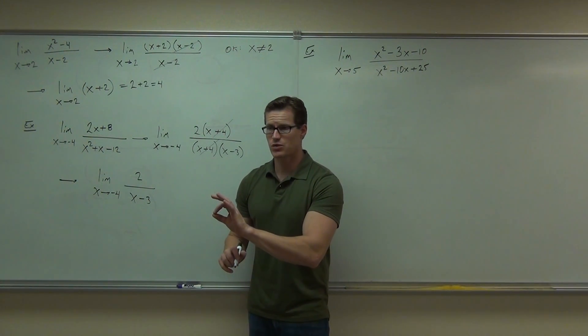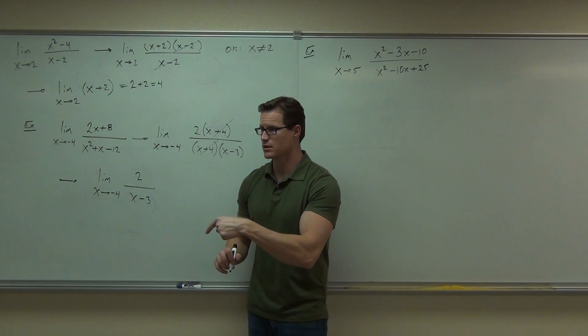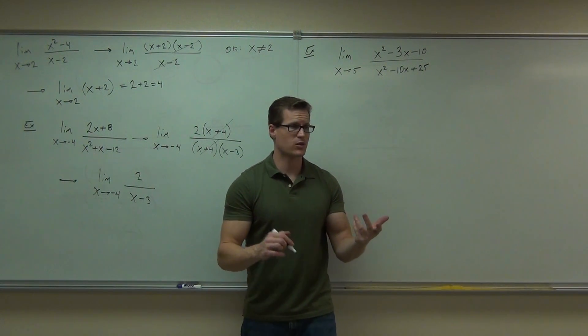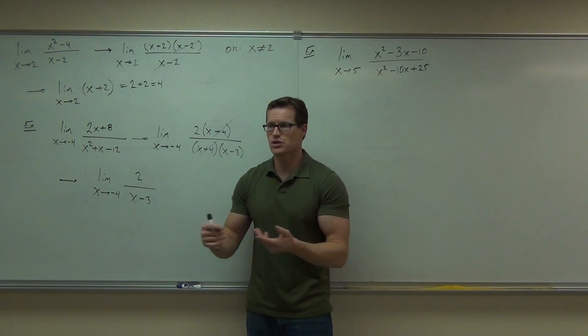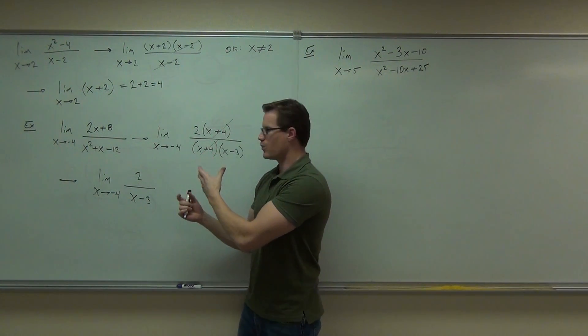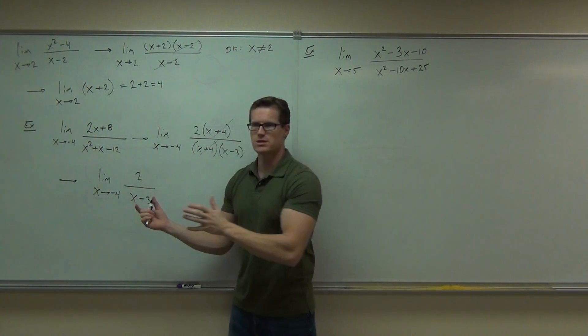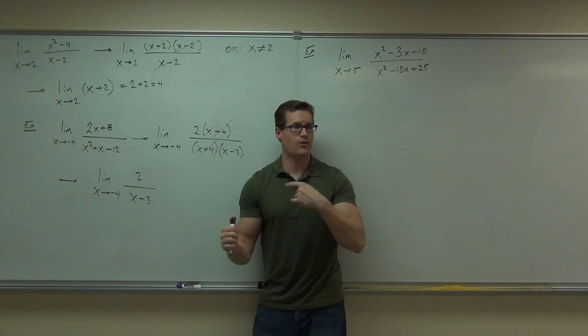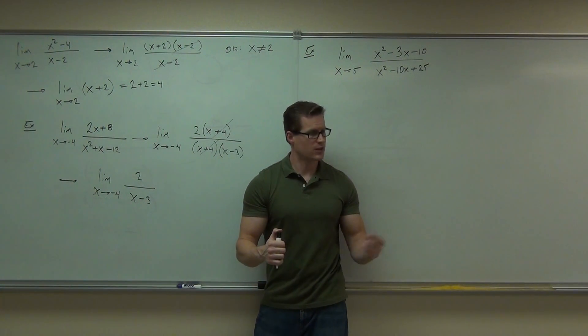Because if I plug in 3, I have a problem. Don't I still have a domain issue? The answer is, well yeah, sure, at 3, but are we trying to figure out what's happening around 3? I don't care about 3. What point am I trying to figure around? Yeah, so I've gotten rid of the problem, because as soon as I cross out this x plus 4, now when I substitute negative 4, it's no longer an issue. Can you now evaluate at negative 4? Let's go ahead and do that.